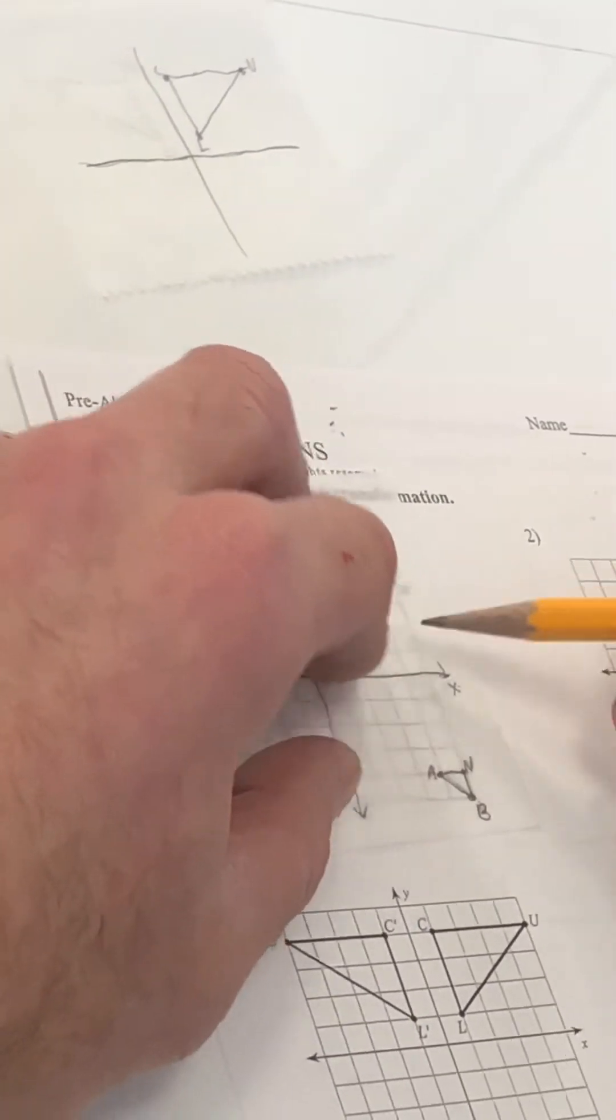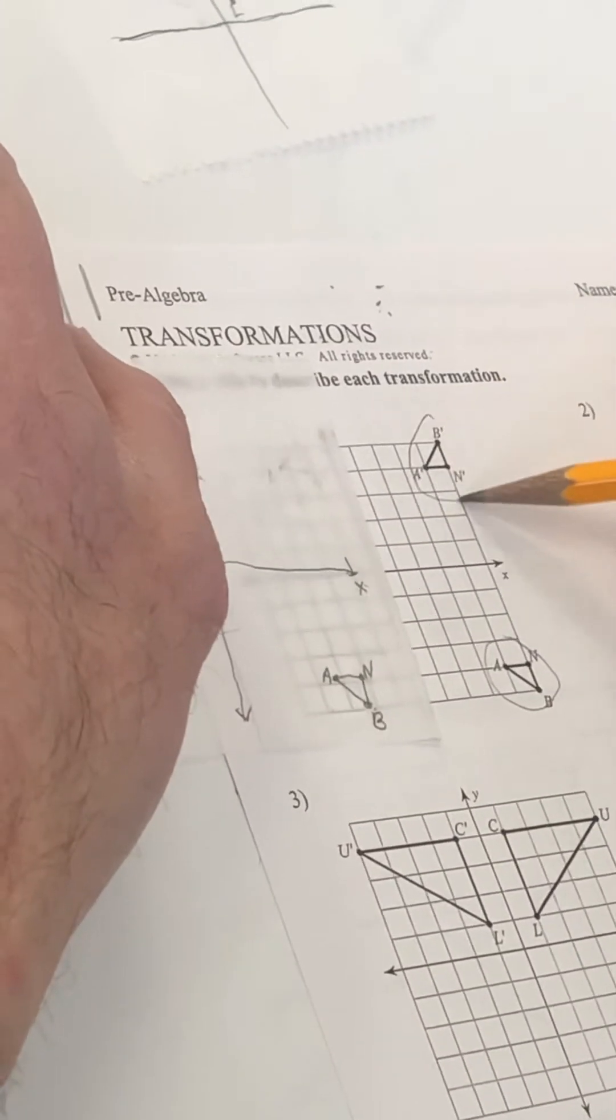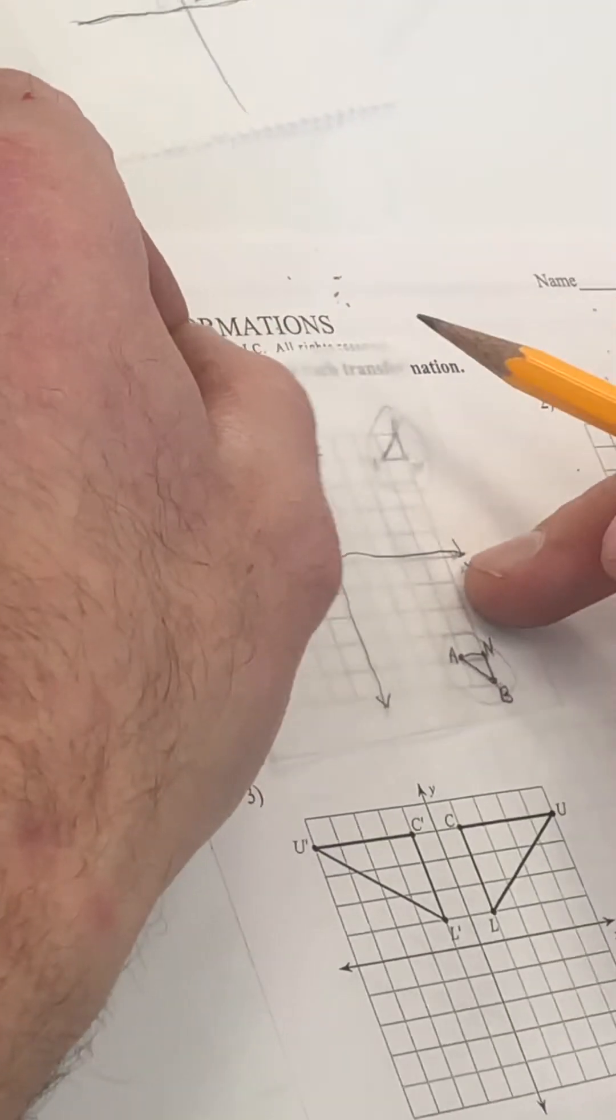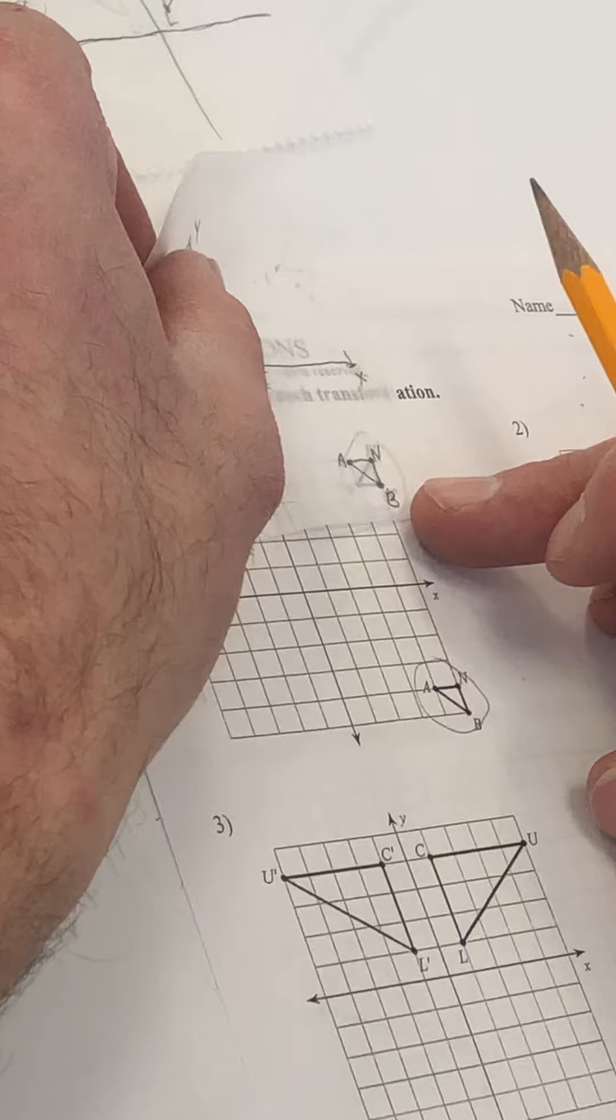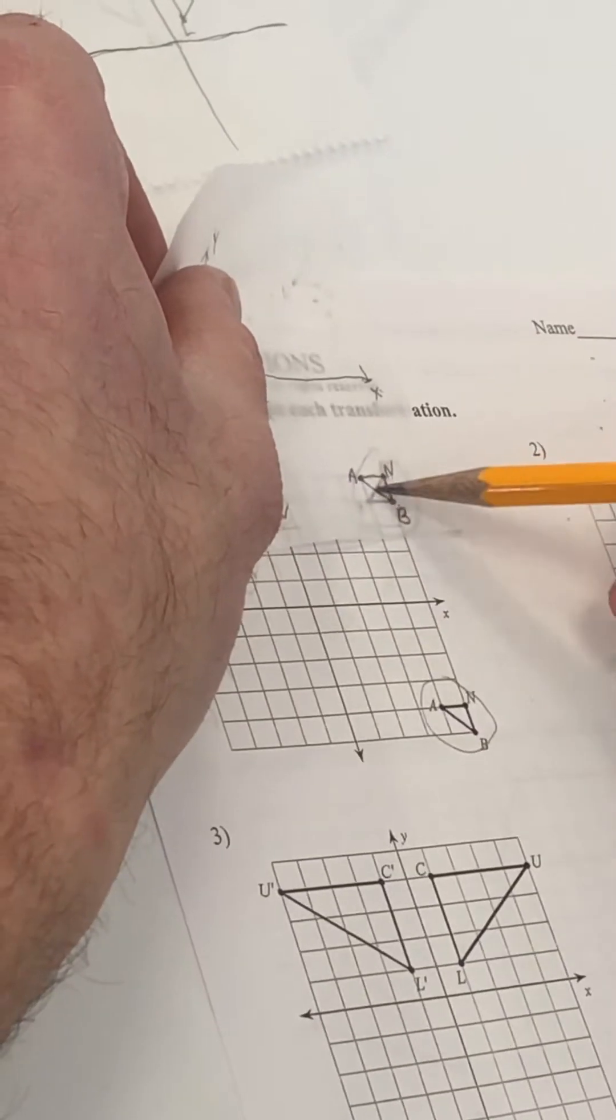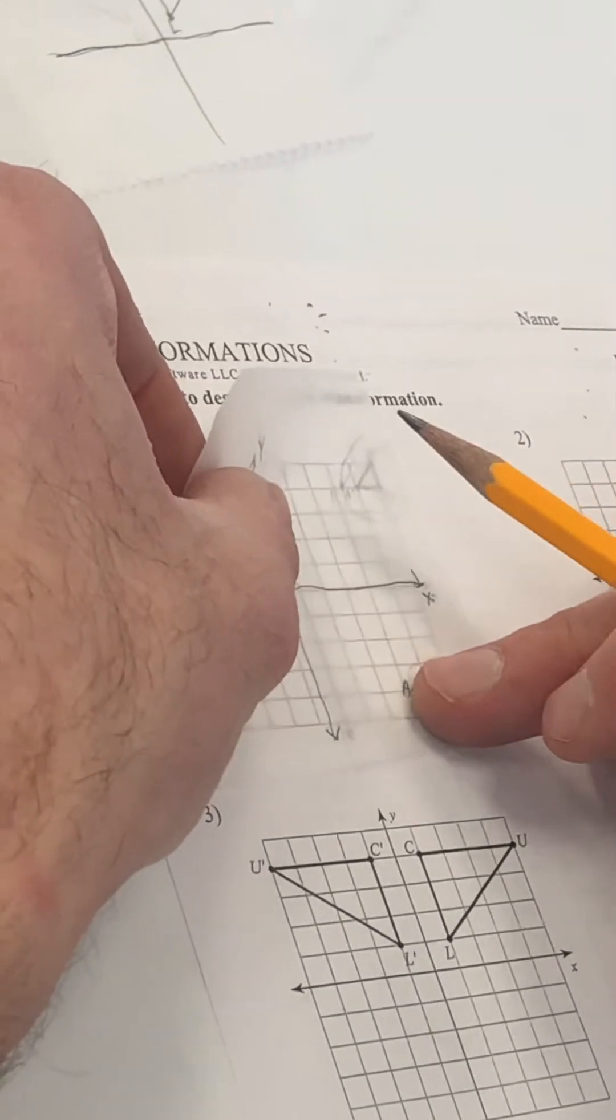Now, the idea is for this paper is figure out how do I get from here to here. And it looks like to me if I slide my paper up. Nope, that doesn't work. Can you see that that doesn't match? So it's not translate. Translate is a slide.